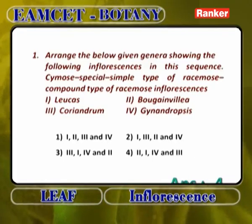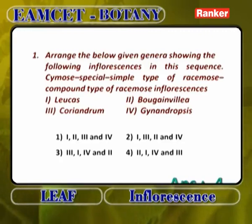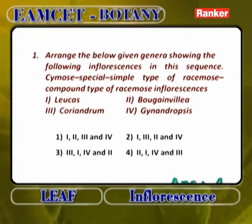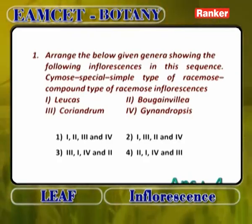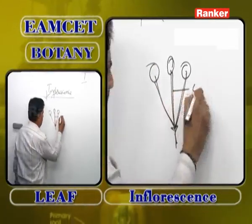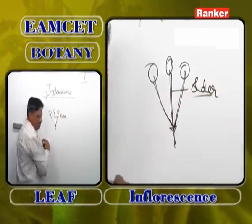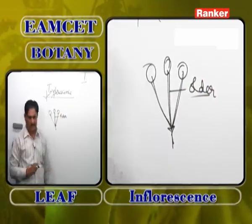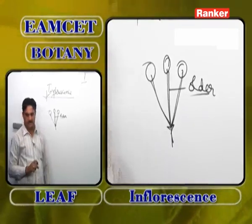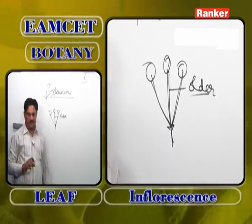Cymose inflorescence is 2 — Bougainvillea — where simple cyme or cyme mule is present. The peduncle grows definitely and ends as a flower; from the lower side, two lateral branches develop, they also become flowers, and growth stops. The central flower is the older flower. Special type is 1 — Leucas — because in Leucas you find the verticillaster, which is a special type of inflorescence.